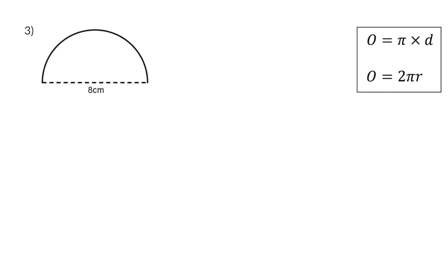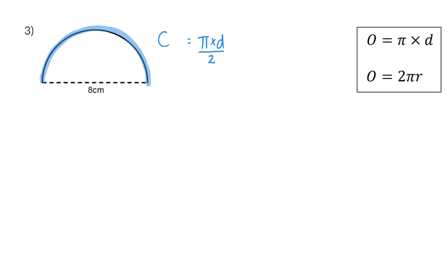In the third example we do not have a complete circle anymore, but only half a circle or a semicircle. This means that the circumference of our shape will only be half of the original circle circumference. So to calculate the circumference I start with the formula pi times diameter, but divide this by 2 because I only have half the circle. The diameter is 8 centimeters, so we have pi times 8 divided by 2, giving 4 pi, which rounded to two decimals is 12.57 centimeters.